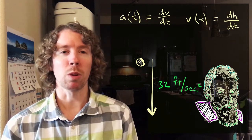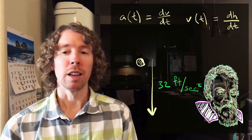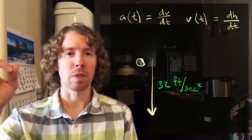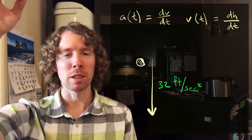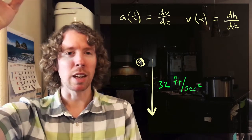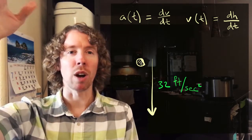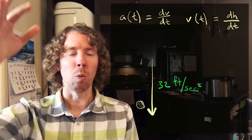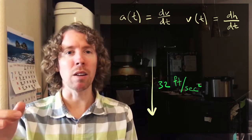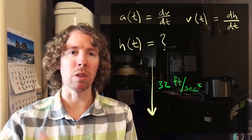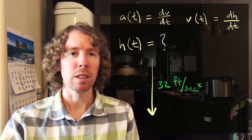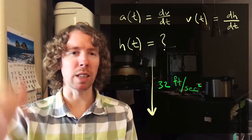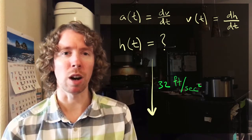One question we could ask is: if we take a marble to the top of the Empire State Building — let's say it's a thousand feet high — and then we drop the marble, what's the function that gives the height of the marble above the ground in feet after t seconds after being dropped?